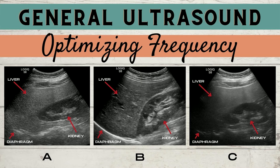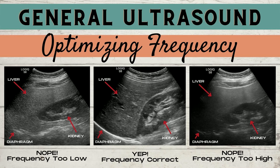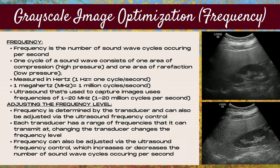Now that you know the anatomy, do you know which image has the correct frequency? The image with the correct frequency is letter B, in the middle. Letter A has a frequency that's too low, and letter C has a frequency that's too high.